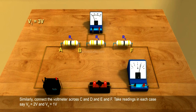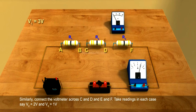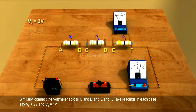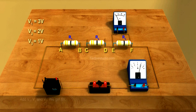Similarly, connect the voltmeter across C and D and E and F. Take readings in each case. Say V2 equals 2 volts and V3 equals 1 volt. Add V1, V2, and V3. We get 6 volts.